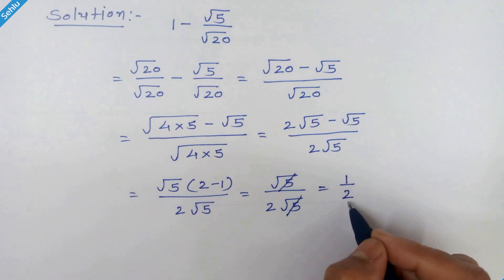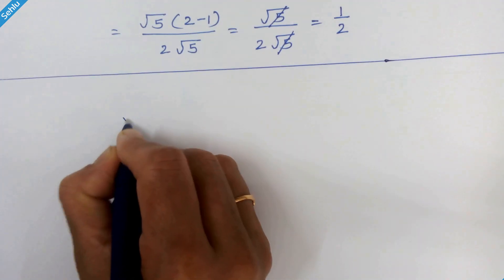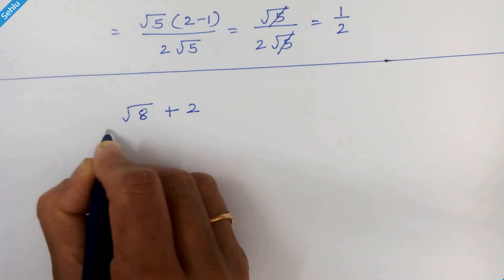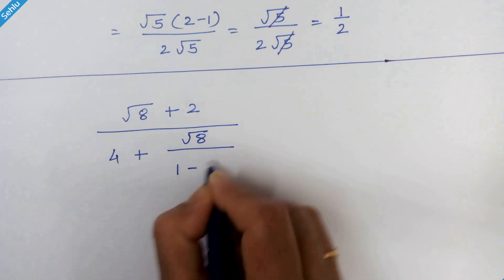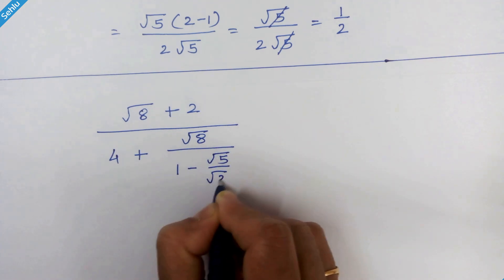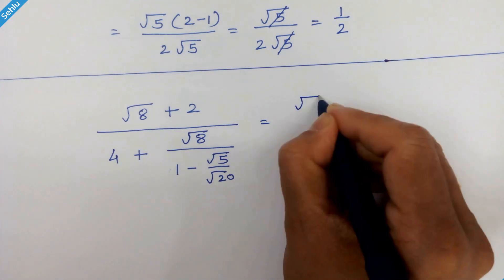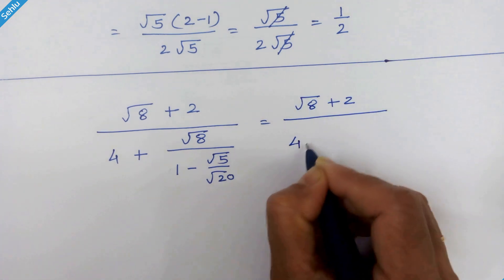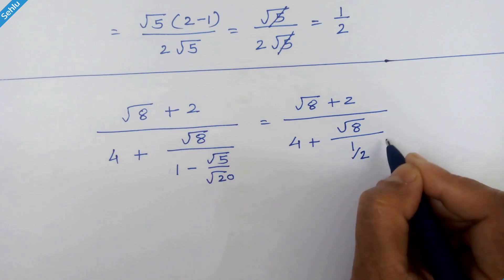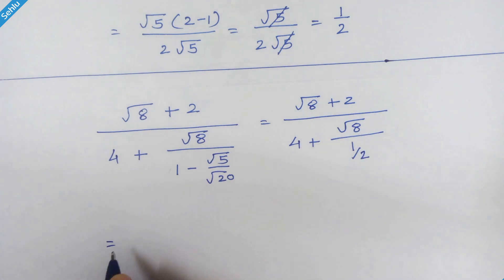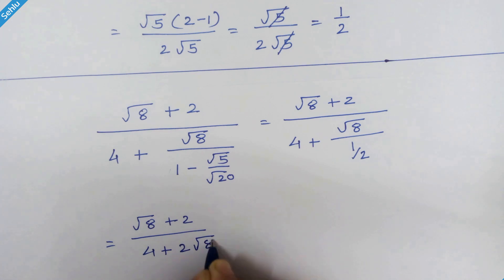So let's put 1 upon 2 in place of this part. Our main equation is square root of 8 plus 2 upon 4 plus square root of 8 upon 1 minus square root of 5 upon square root of 20. Let's put 1 upon 2 in place of this part. So it will be square root of 8 upon 1 upon 2. This 2 will multiply here. So we have 4 plus 2 times square root of 8.